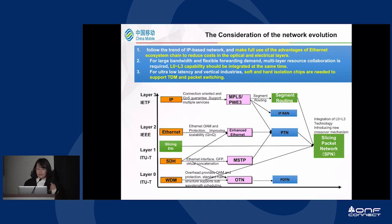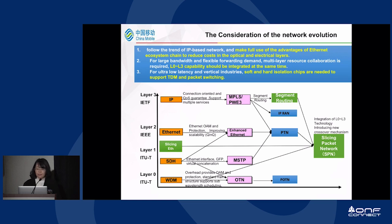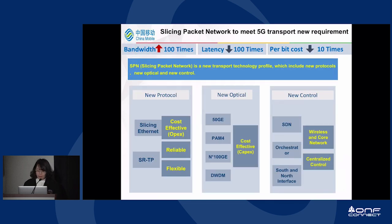There are a few things we need to keep in mind when designing this new 5G transport network. First, we should follow the trend of IP-based networking and make full use of the Ethernet ecosystem to reduce costs in optical and electrical layers. Second, for large bandwidth and flexible forwarding, multi-layer resource collaboration — integrating layer 0 to layer 3 capabilities — is required. Third, for ultra-low latency and vertical industries, soft and hard isolation chips are needed to support TDM and packet switching. Bearing all these in mind, we bring the Sliced Packet Network to meet 5G transport requirements.